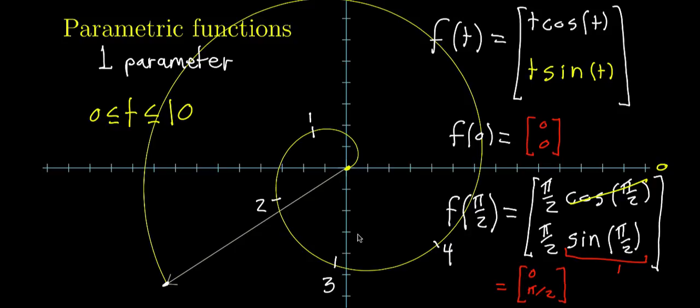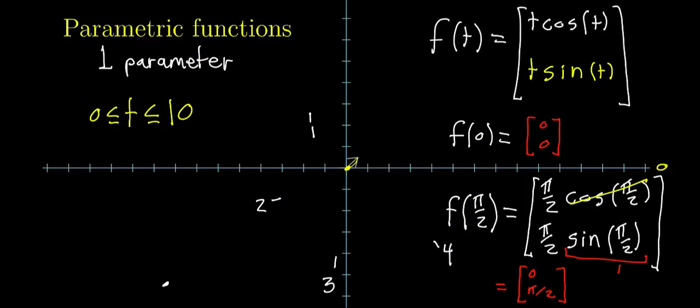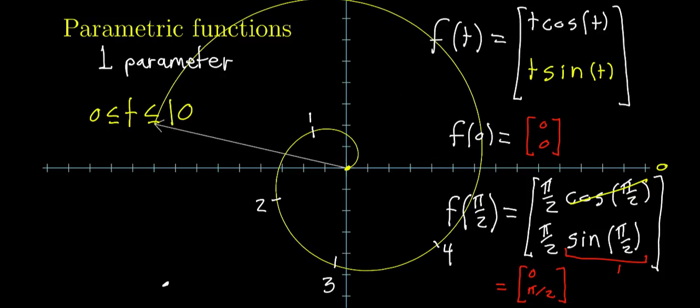But just to show where it might matter, I'll animate the same thing again, another function that draws the same curve, but it starts going really quickly and then it slows down as you go on. So that function is not quite the t cosine t, t sine of t that I originally had written.